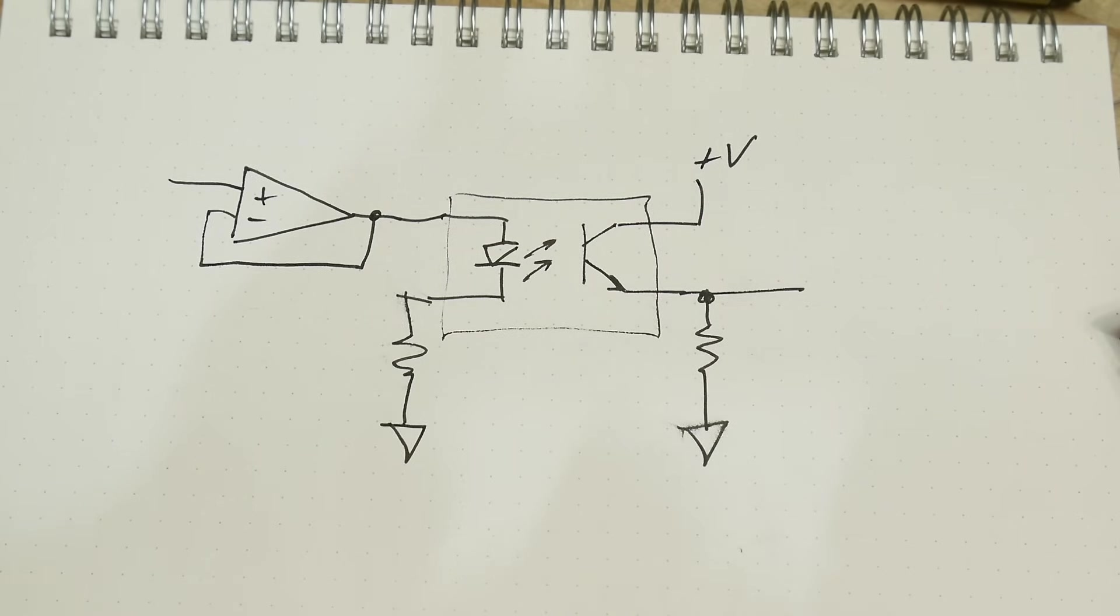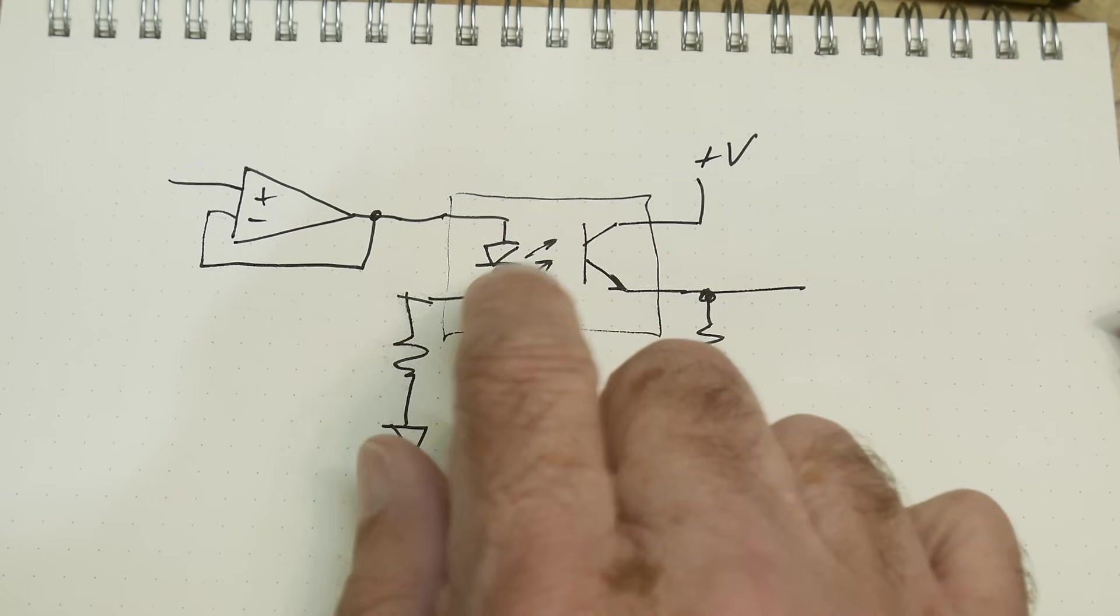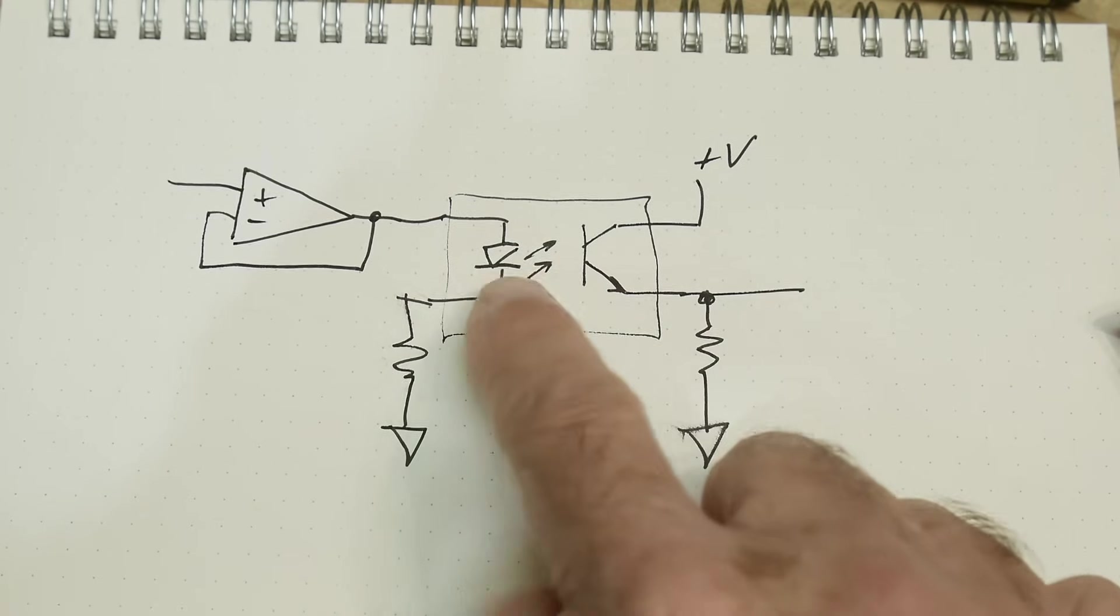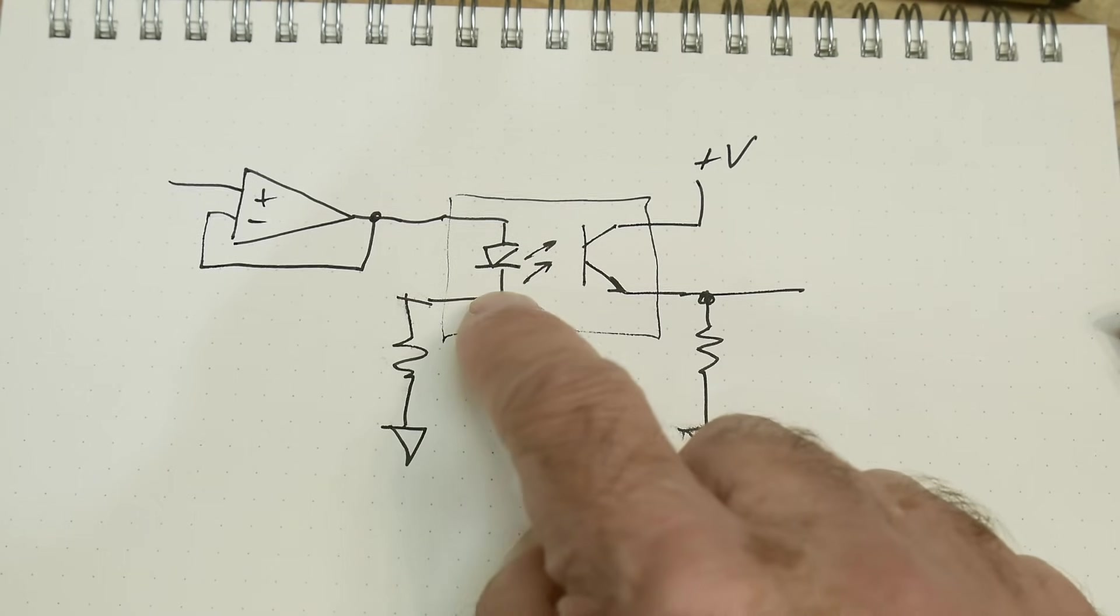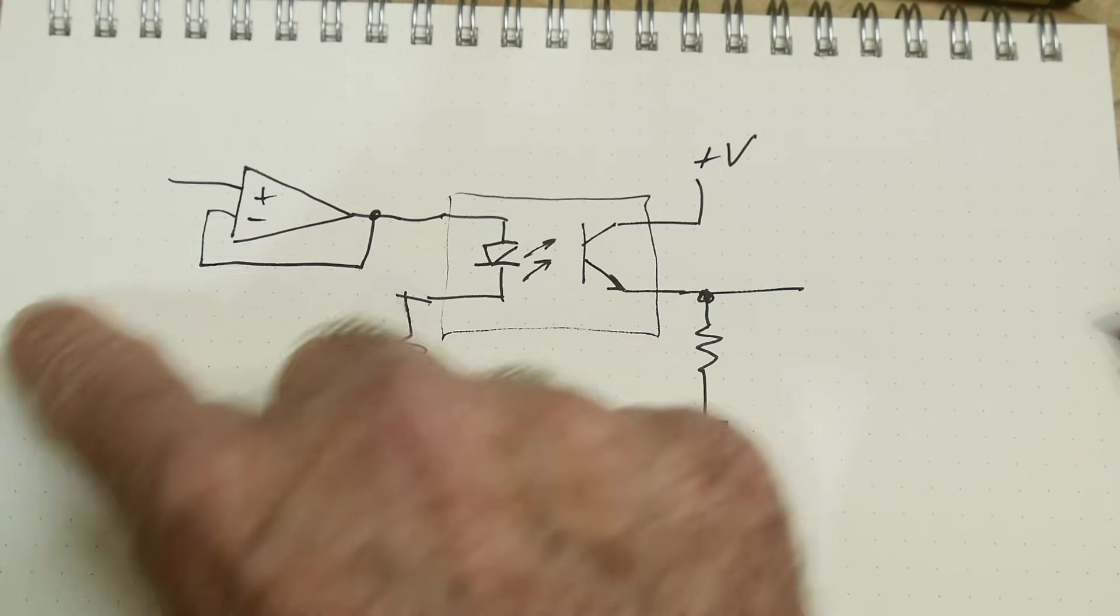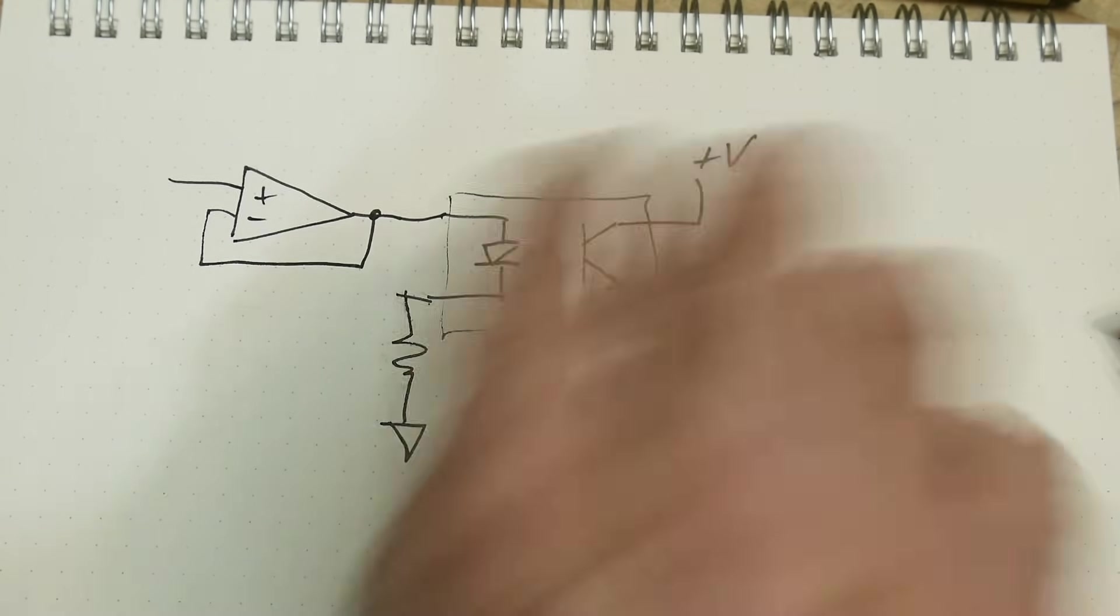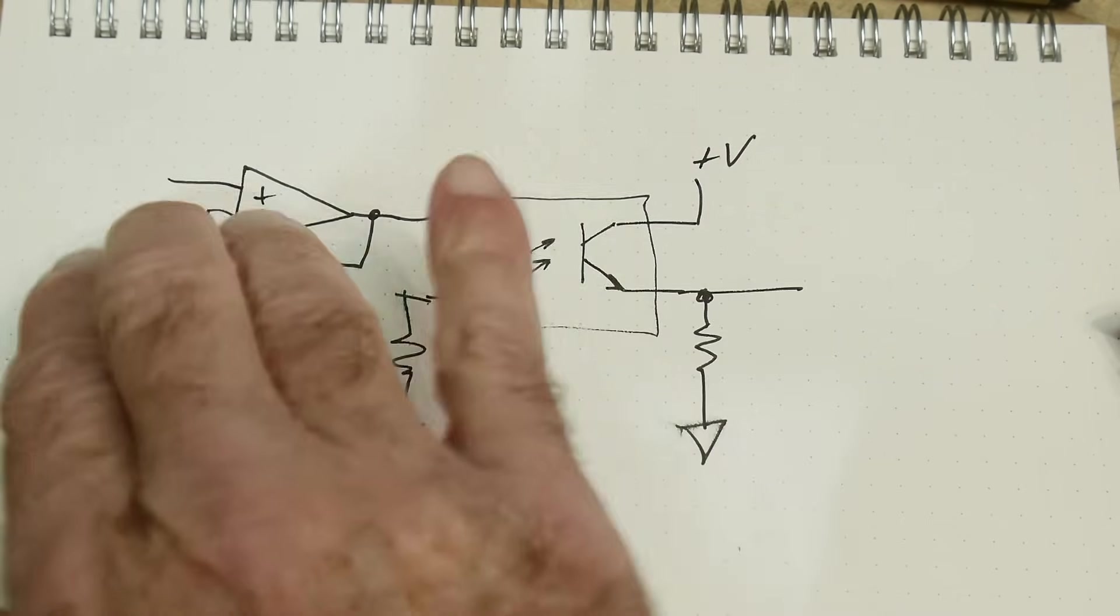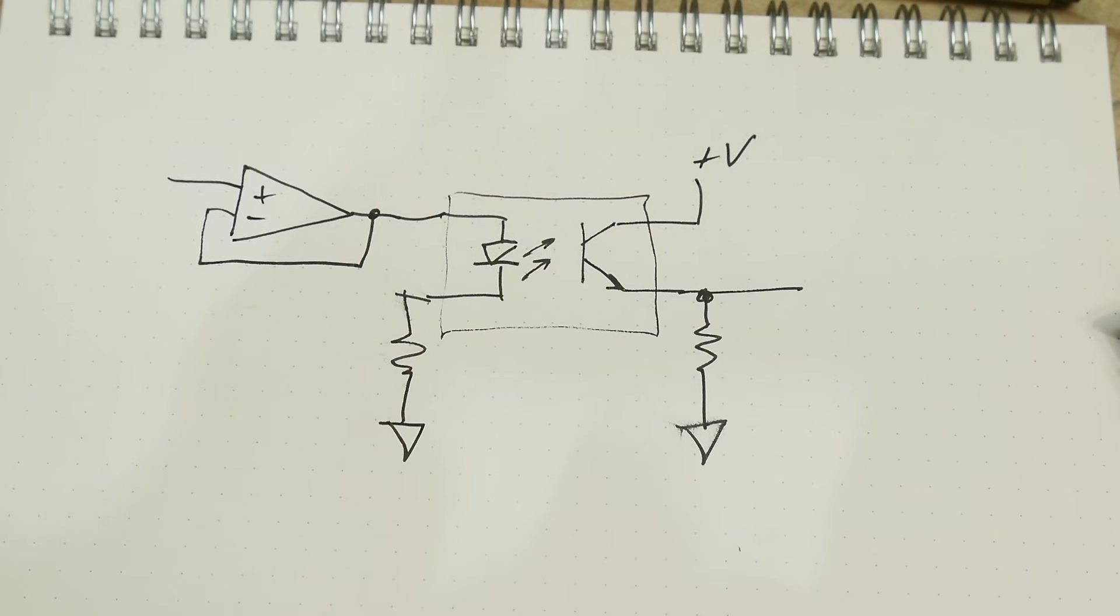I talked about optocouplers once before and tested the linearity of the device. This is an LED, so it's a diode with a curve. If you input voltages on this side and look at voltages on that side, it'll follow a curve, so it's not going to be linear from one side to the other.